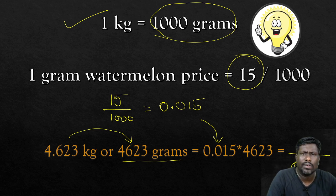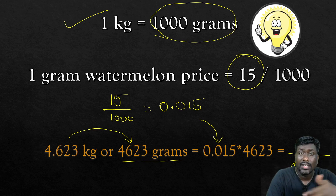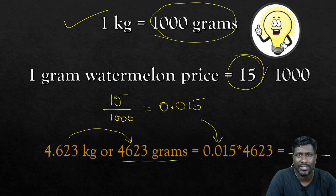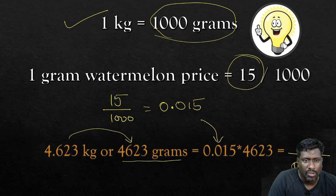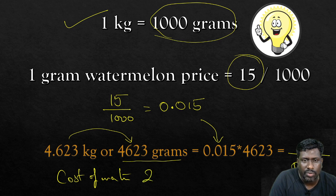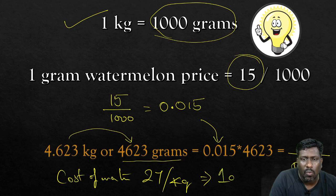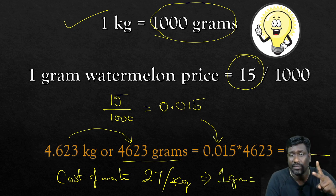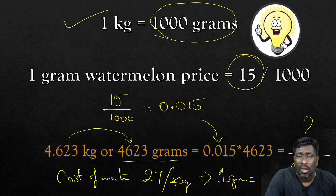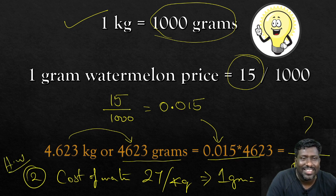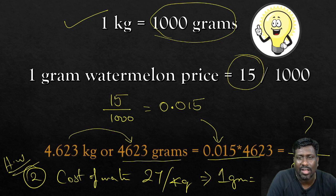Whatever it may be, suppose in your place the watermelon cost is 23 rupees. What is the cost of 1 gram? I give you an open question. Cost of watermelon is 27 per kg. Can you tell me what is the cost of 1 gram? Two questions I have given to you. You have to find the price of this problem and next is this. This is your homework. Just tell me what is the price I should pay for 1 gram. Just calculate it.